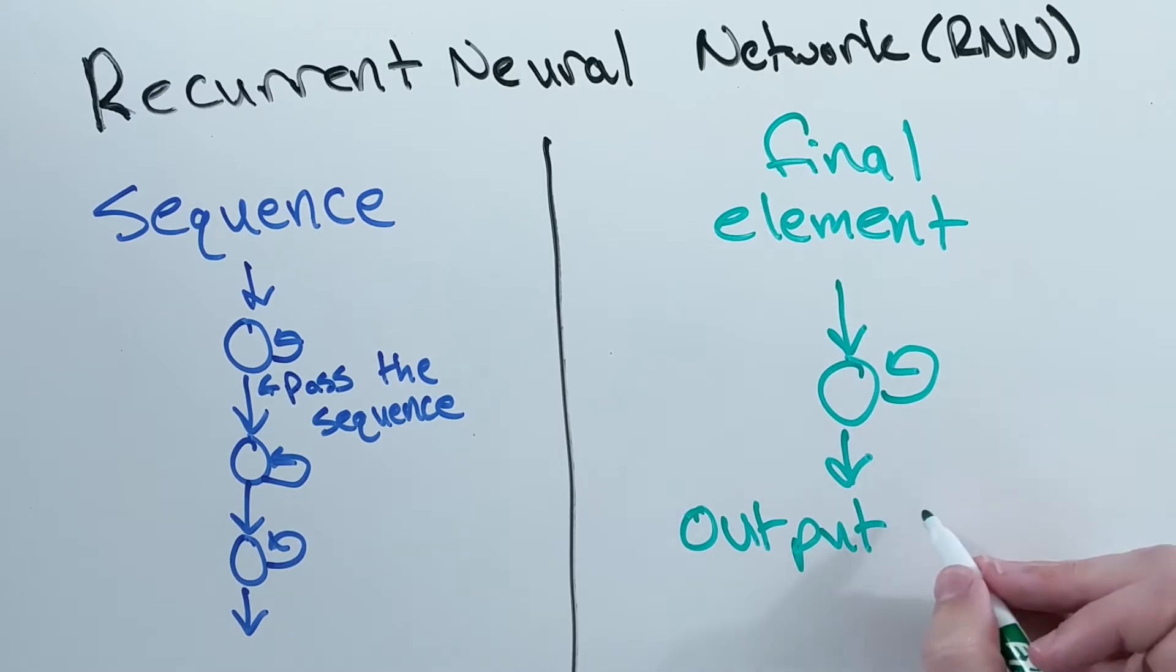In the last layer, using the final output state of the RNN can make sense for two reasons. One, the RNN is supposed to remember everything that happened before and use that information to compute the final output state.